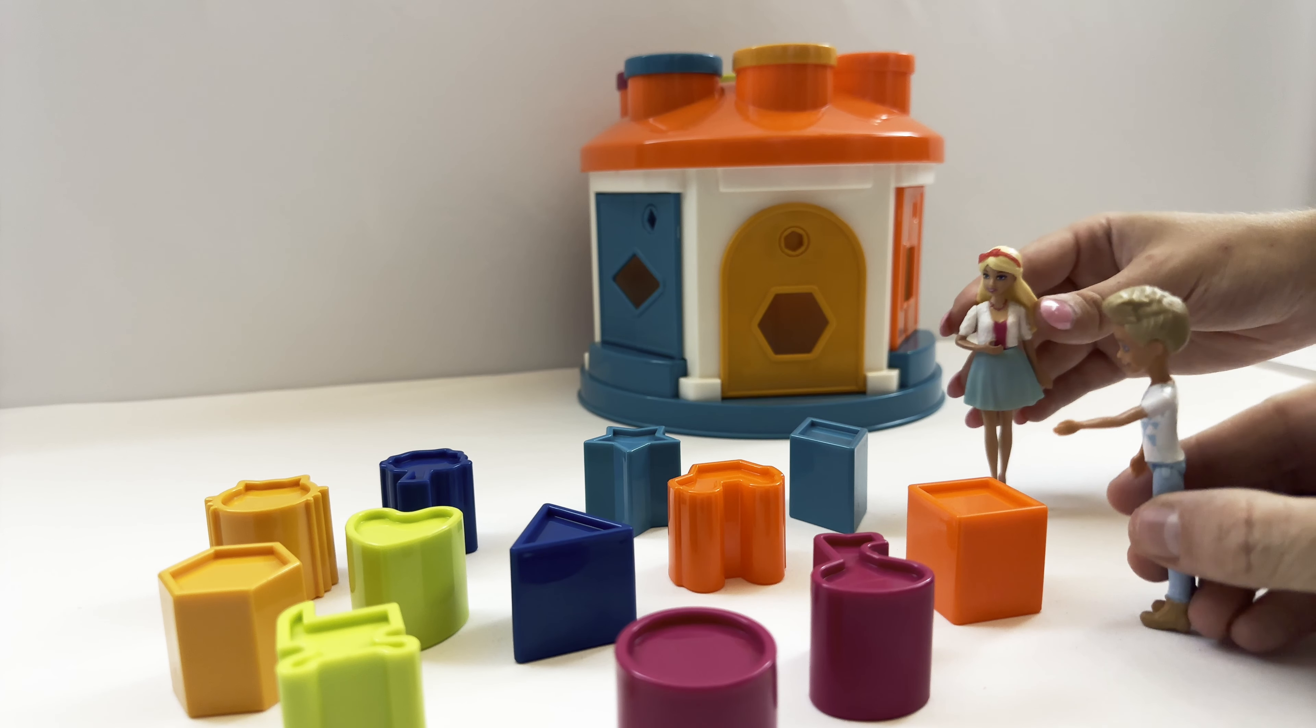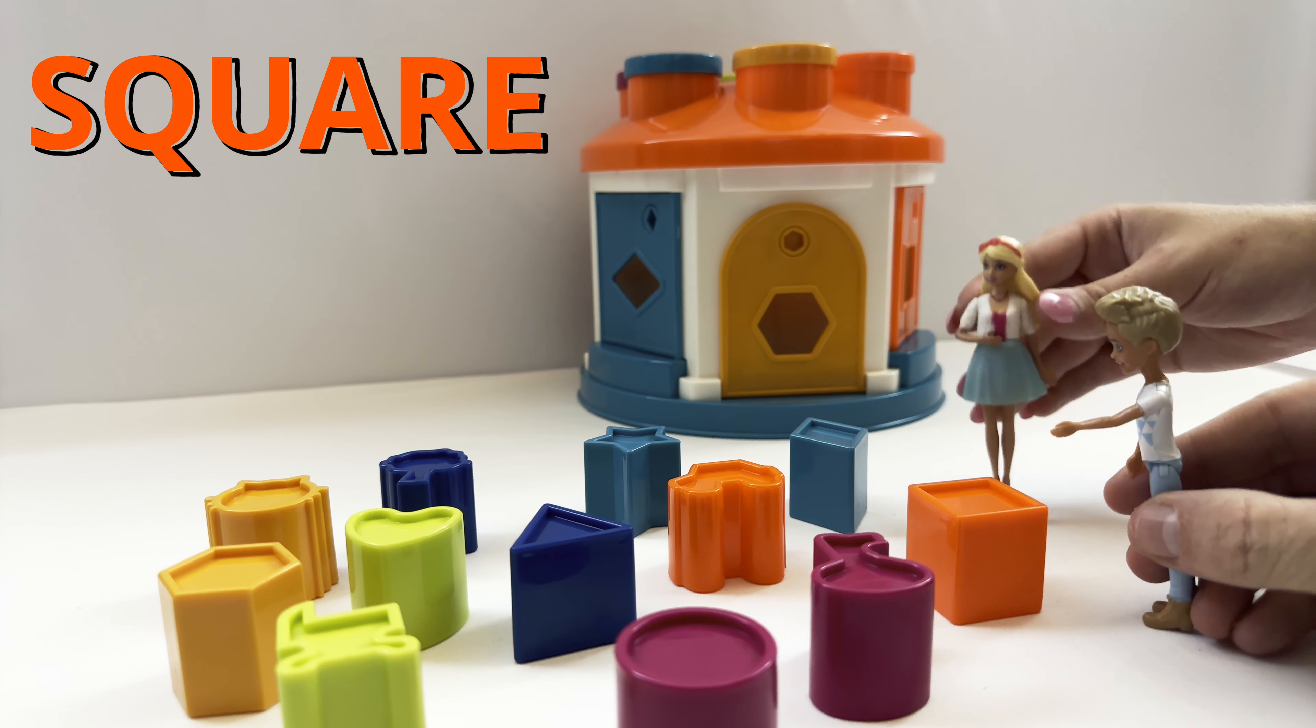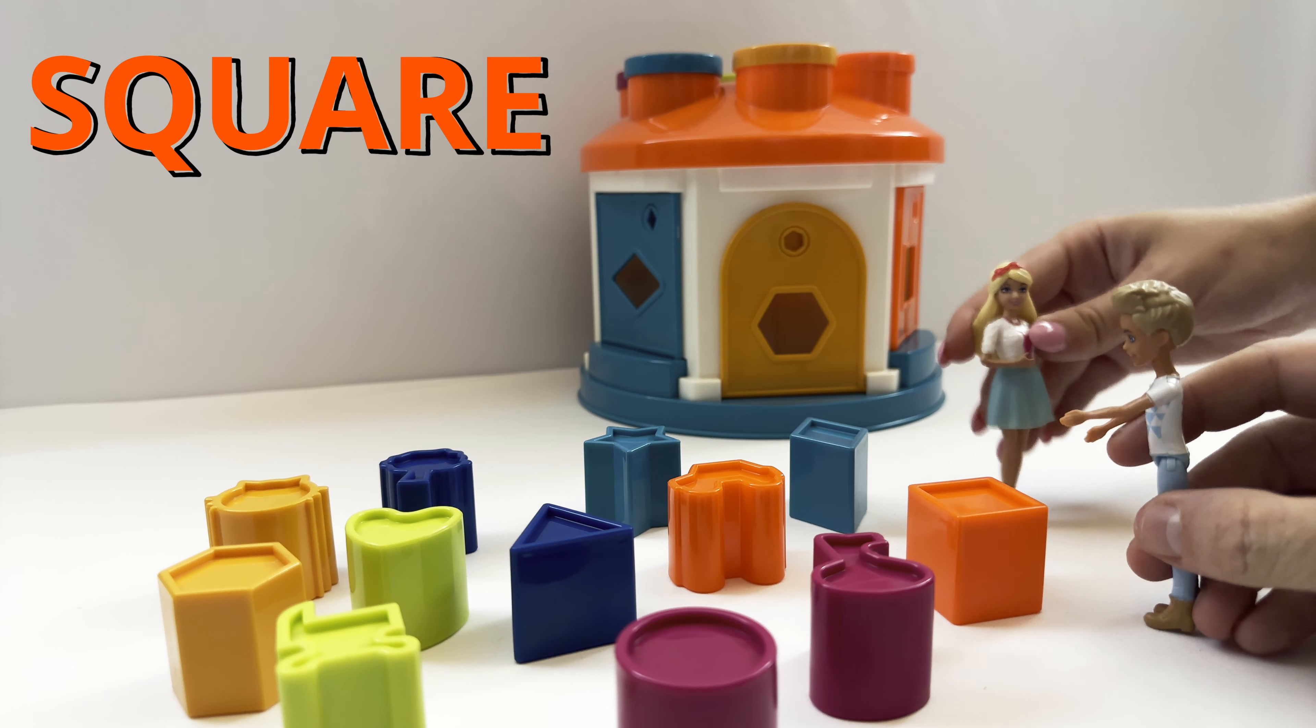Look, Barbie, we have a square. Yeah, Ken, that's an orange square. Let's put it where it goes.